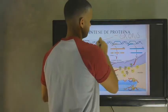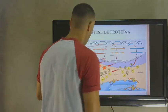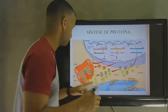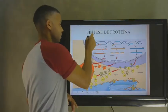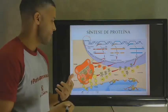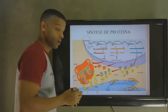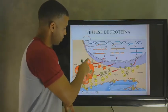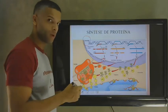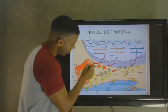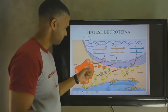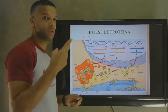Quando esse RNA sai do núcleo, ele precisa agora passar pelo processo de tradução. Quem vai fazer essa tradução será o ribossomo, formado por uma subunidade maior e uma subunidade menor. Esse ribossomo vai se ligar à molécula de RNA. Como é feita essa leitura? Essa leitura é feita através de códigos ou trincas — três bases nitrogenadas: guanina, guanina, uracila. Por que é chamado de trinca? Por conta dessas três bases nitrogenadas.